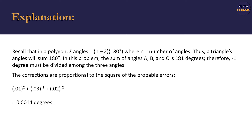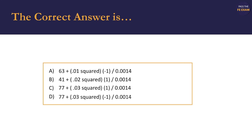The corrections are proportional to the square of the probable errors. 0.01 squared plus 0.03 squared plus 0.02 squared provides us with 0.0014 degrees. Upon reviewing our four choices, we noticed that answer A starts with an uncorrected angle of 63 degrees. This corresponds with angle A as it was given to us. However, we're trying to find the probable value of angle B. We can eliminate answer A for this reason.